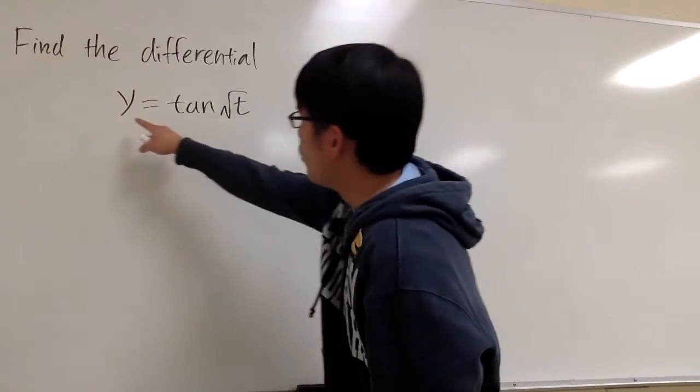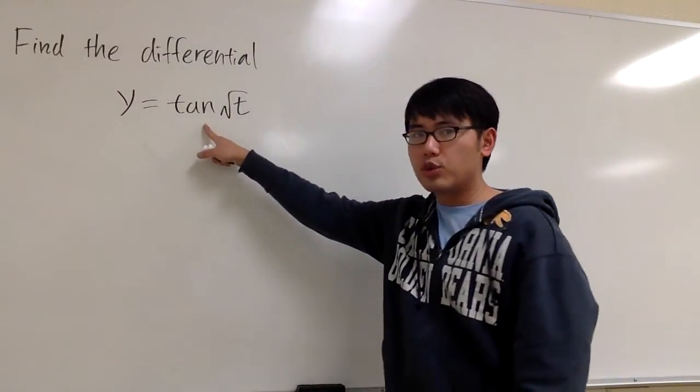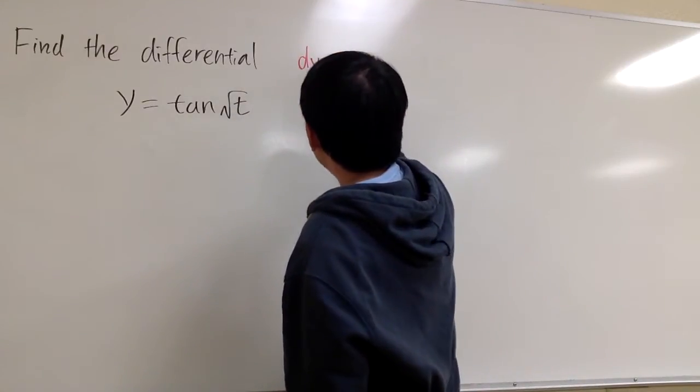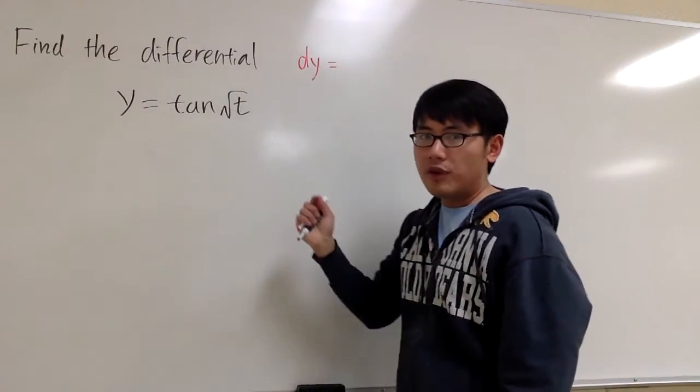Let's find the differential for y equals tangent of square root of t. To find a differential, the formula is dy equals the derivative of the function.